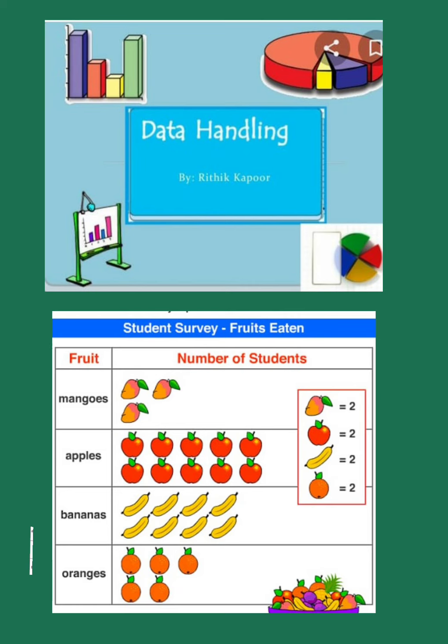Can you see in the end, the column where it is written mango equals 2, apple equals 2, banana equals 2, oranges equals 2? This means they are specifying one orange, one banana, one mango and one apple means two.